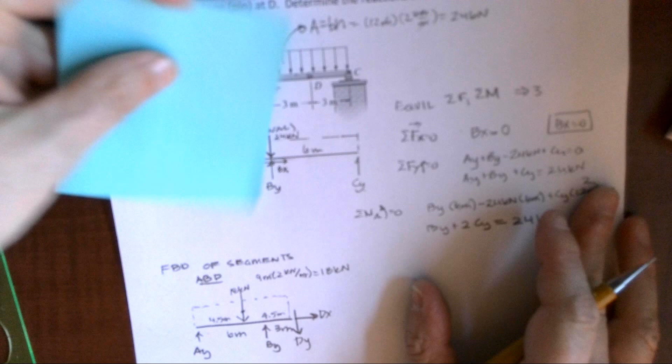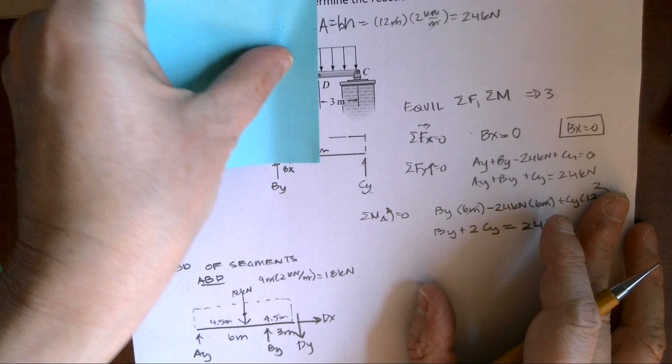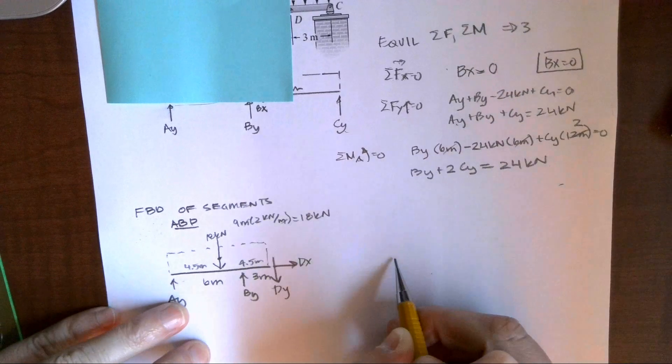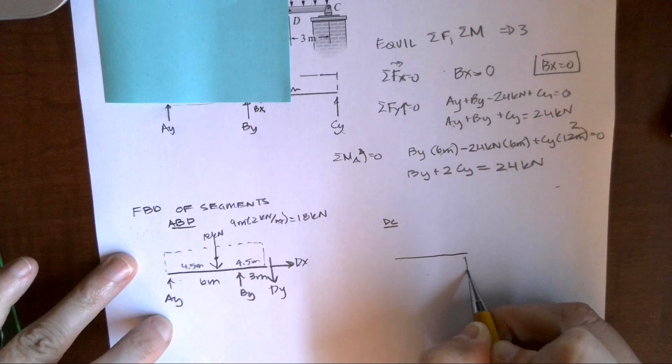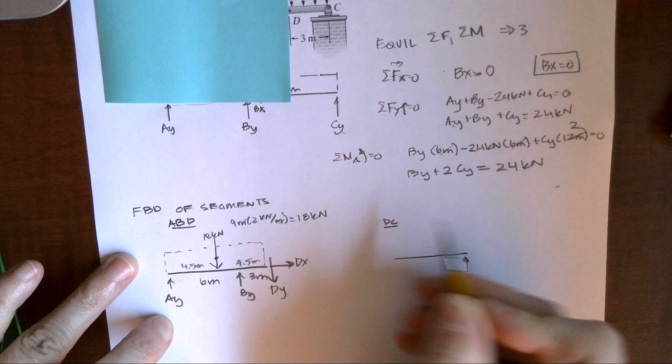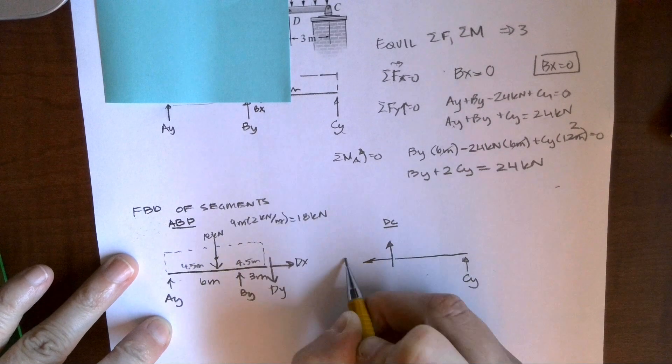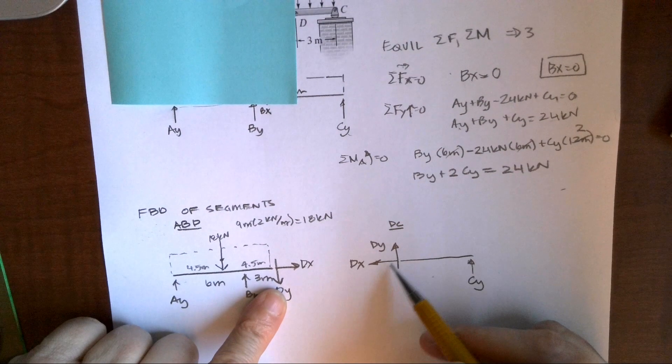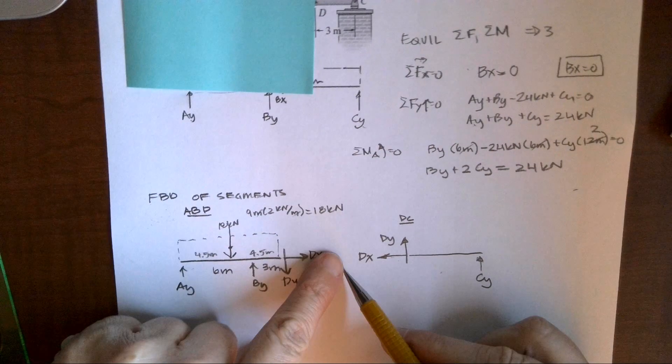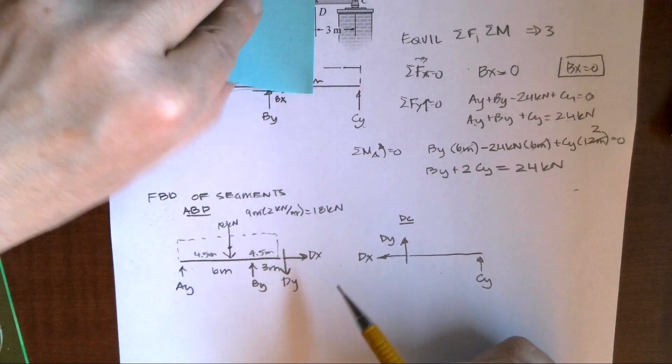Because I took it apart at the pin, I can now cover up this side if I would like and just look at segment DC. When I look at segment DC, I have this unknown CY. I also have that pin that can transfer both the X and Y. When I draw these, I need to make sure I'm drawing them equal and opposite.